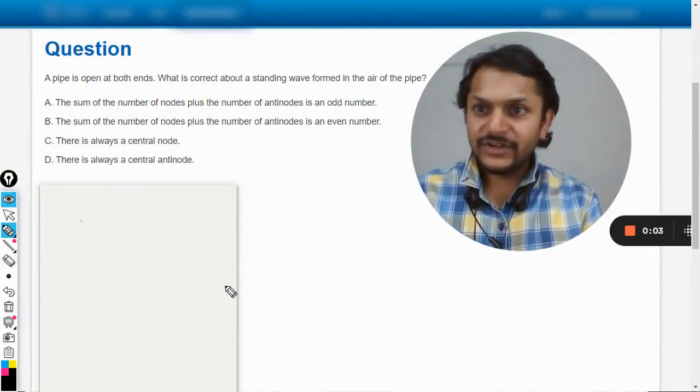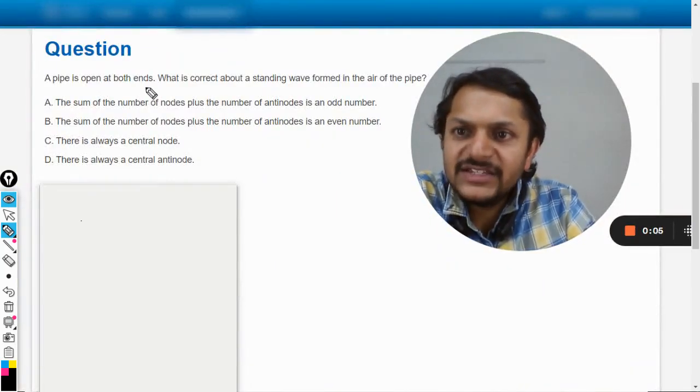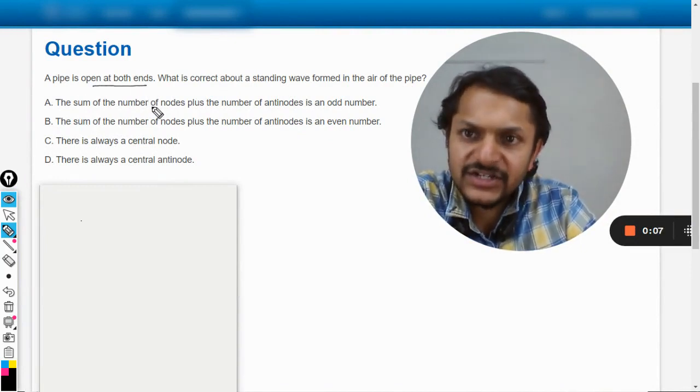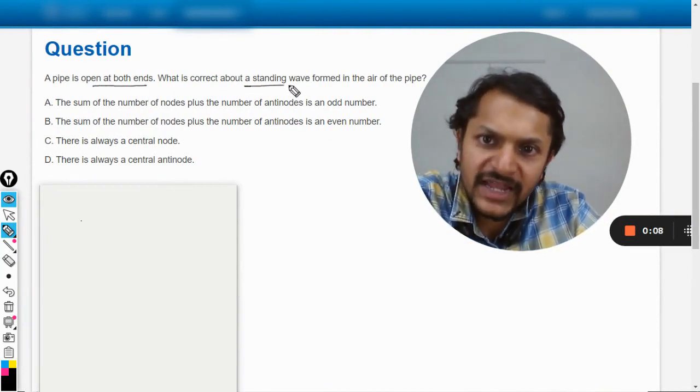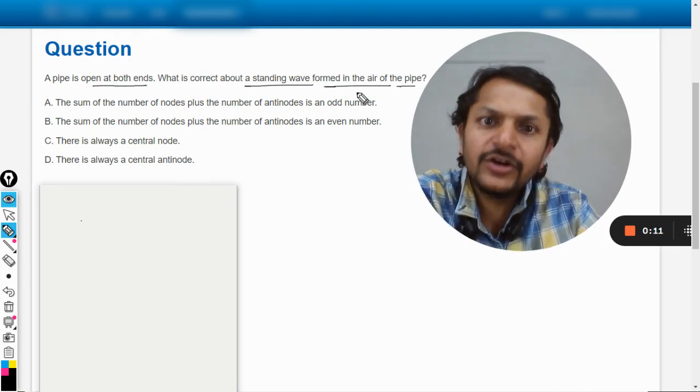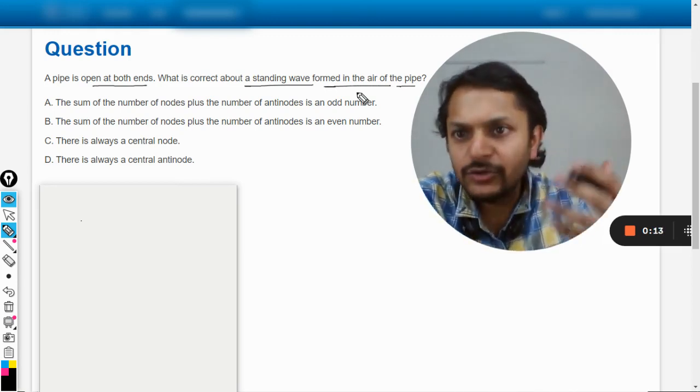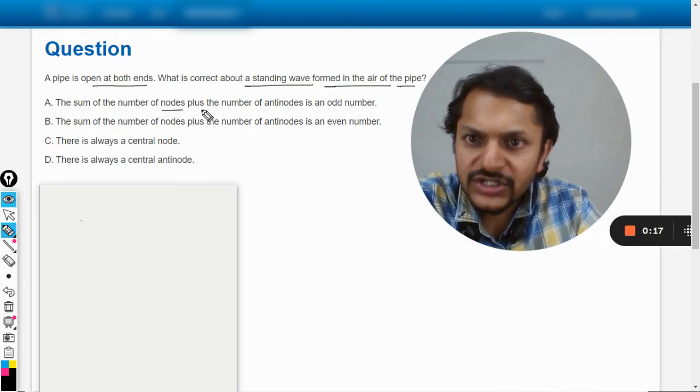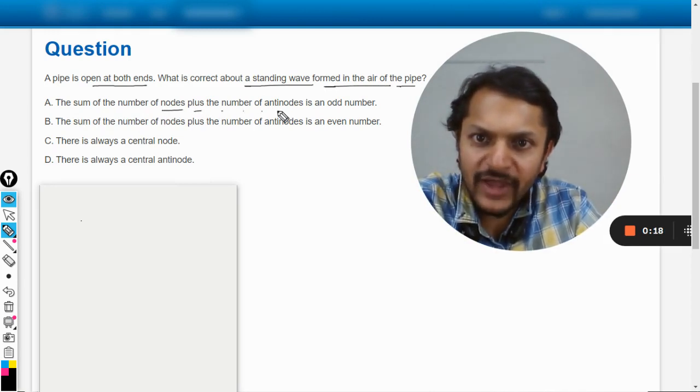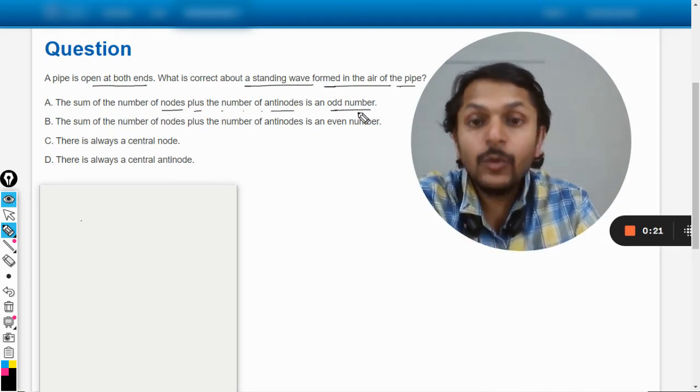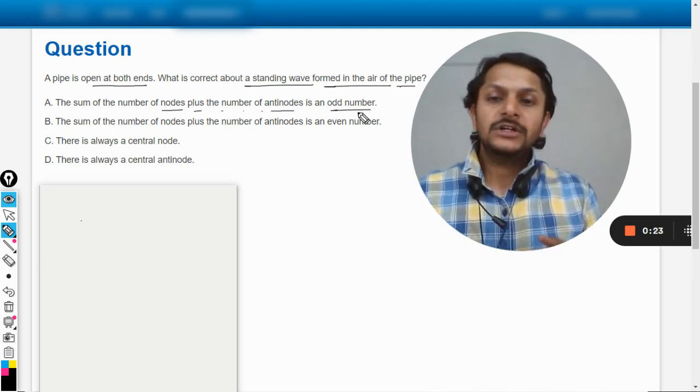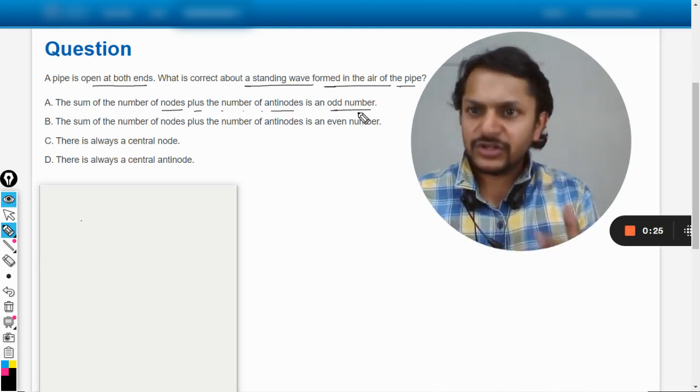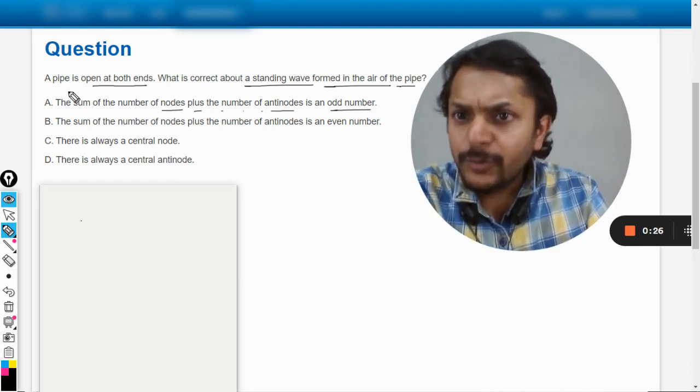Okay, my listeners, let us see what is there in this question. A pipe is open at both ends. What is correct about the standing wave formed in the air of the pipe? Now you see, the sum of the number of nodes plus the number of antinodes is an odd number. We have to think this question in a different way. So pipe is open at both ends.